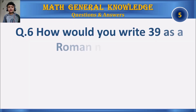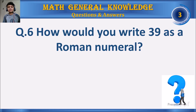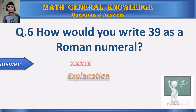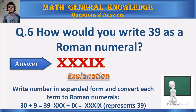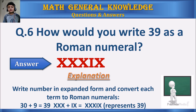Question 6: How would you write 39 as a Roman numeral? Your time starts. The answer is XXXIX. Write the number in expanded form and convert each term: 30 plus 9 equals 39, so XXX plus IX equals XXXIX, which represents 39.